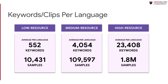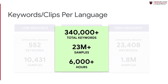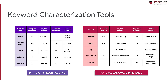On average, each low-resource language has over 500 unique keywords and over 10,000 audio samples. For many languages, our dataset is the first publicly available keyword dataset. In total, our dataset contains 340,000 keywords with over 23 million samples, totaling over 6,000 hours of speech.